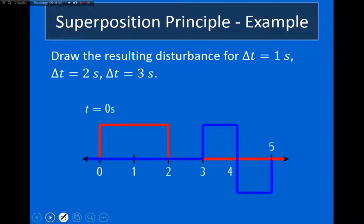So now I want to work through a simple example of this. I have these two waves here. This red wave is moving to the right at a speed of one unit per second, and this wave on the right is moving to the left at a speed of one unit per second. The question is: what is the resulting disturbance going to look like at time t = 1 s, t = 2 s, and t = 3 s?